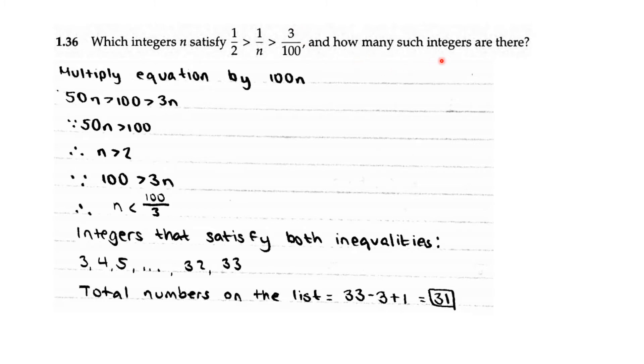If you multiply this inequality by 100n, 50n is greater than 100, which is greater than 3n. So since 50n is greater than 100, that means n is greater than 2.